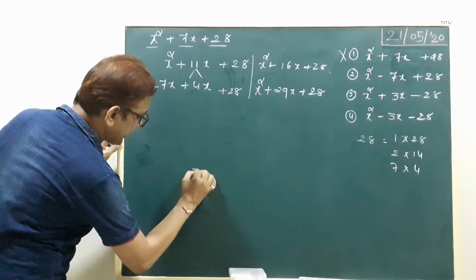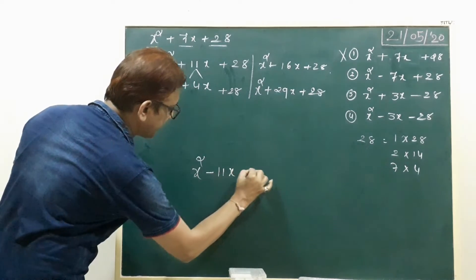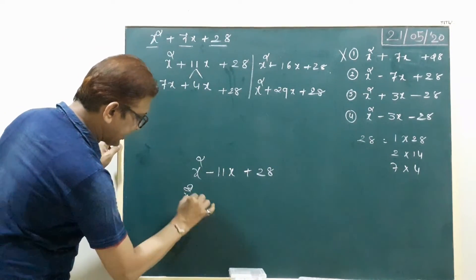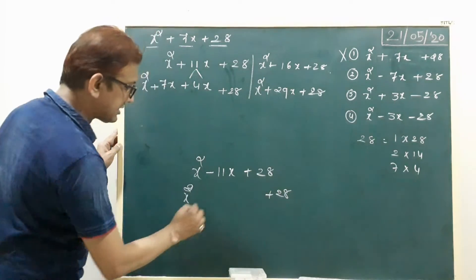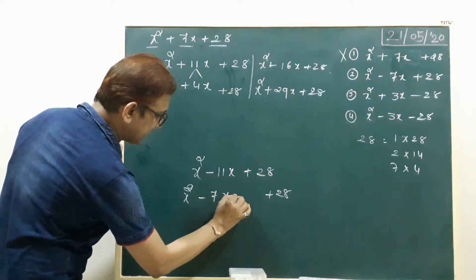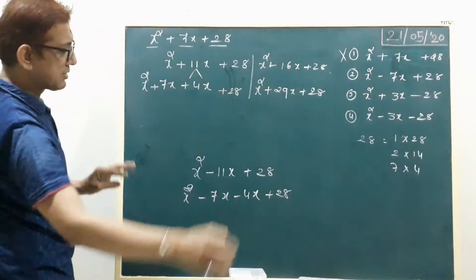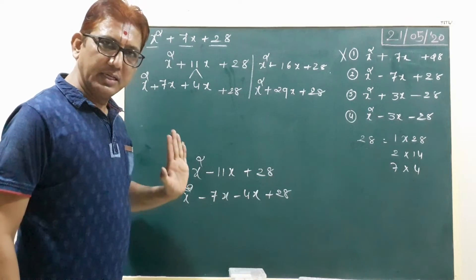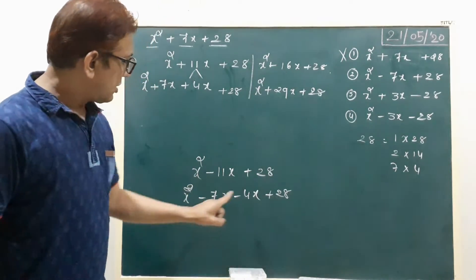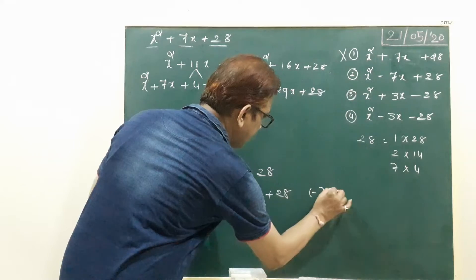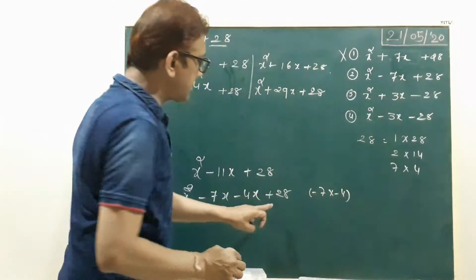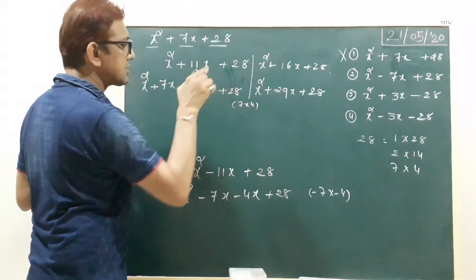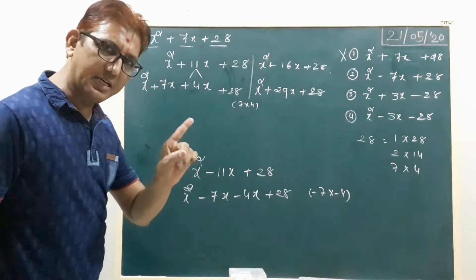Second example: x² − 11x + 28. Here x² and +28 remain as is. We split the middle term as −7x and −4x, because −7+(−4)=−11. Note that (−7)×(−4)=+28, which matches the positive last term.